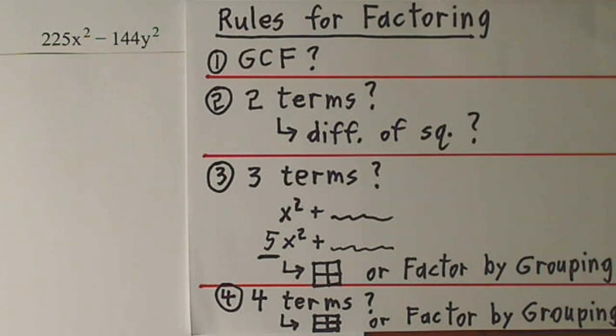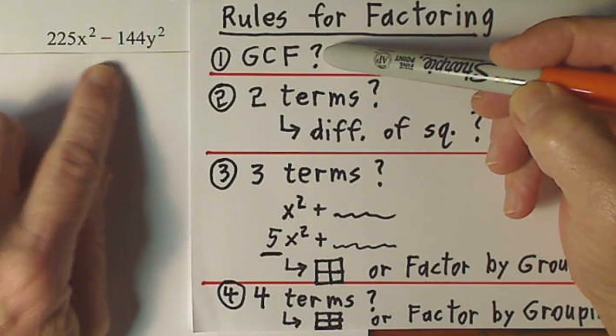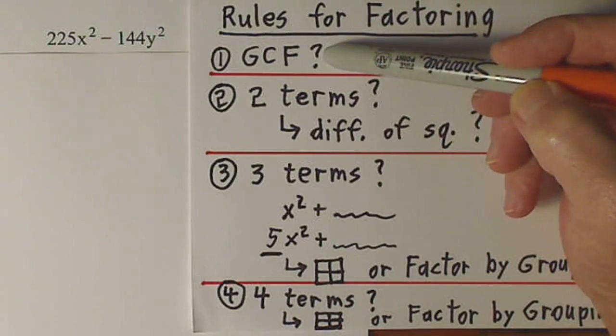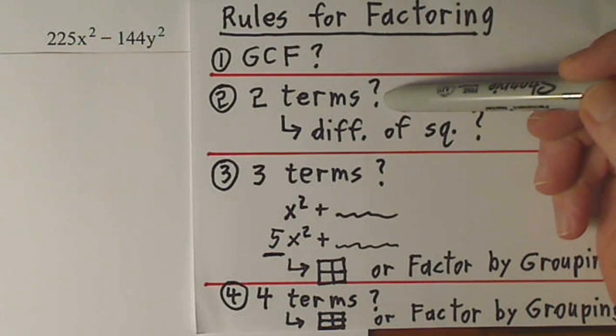The very first thing to worry about is there a greatest common factor. You check both terms, there is no common factor, well, other than one. That wouldn't change anything.